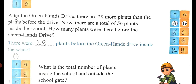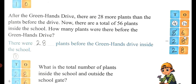After the green hands drive, there are 28 more plants than before the drive. Now there are 56 plants total inside the school. How many plants were there before the green hands drive? Write 56 above and subtract 28. 6 cannot be subtracted from 8, so 5 gives one number — it becomes 16. 16 minus 8 is 8, and 4 minus 2 is 2. So there were 28 plants before the green hands drive.